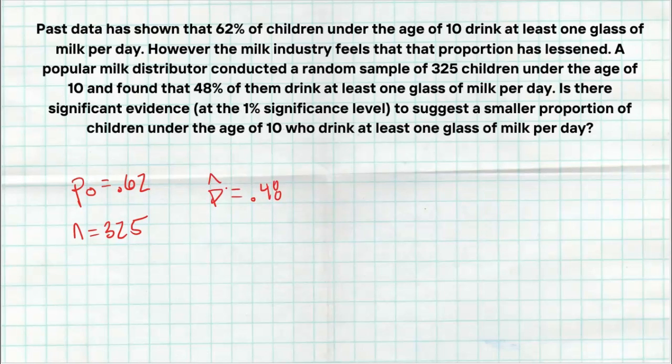When we're going to use our calculator, oftentimes you're going to ask for X. That's going to be how many kids in the sample said yes, I drink at least one glass of milk. So this is basically the number of successes. So to get that, we're going to take 325 times 0.48. And if we do this math, sometimes you'll get a decimal, no big deal. And the calculator does want you to round to the nearest whole number, but it ends up this is a perfect 156. We actually don't need that number in our math, as long as we have our P hat, but we will need that number when we go to our calculator.